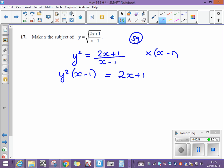And my job now, I have got x on both sides of the equation, both sides of the formula. I now need to collect x on just one side. First of all, I'm going to remove the brackets. So I get y squared x minus y squared is equal to 2x plus 1.